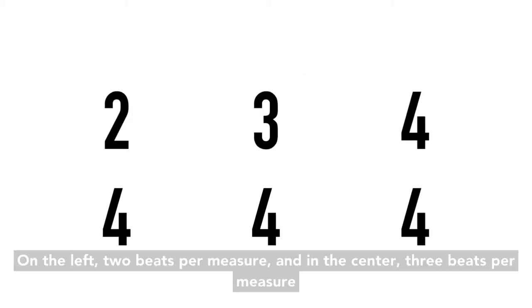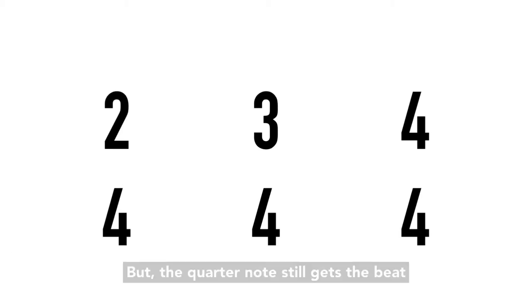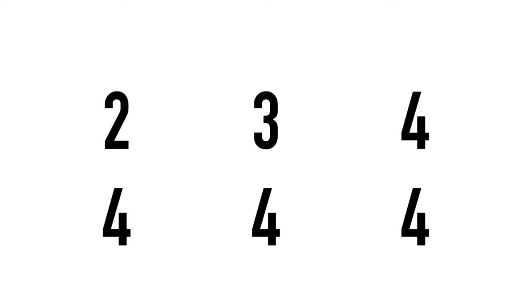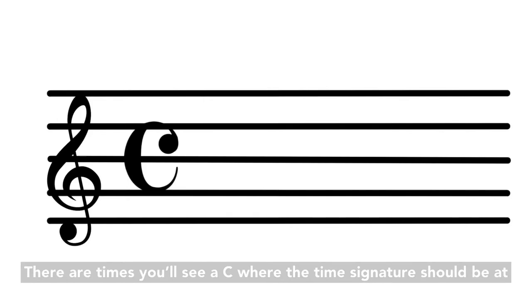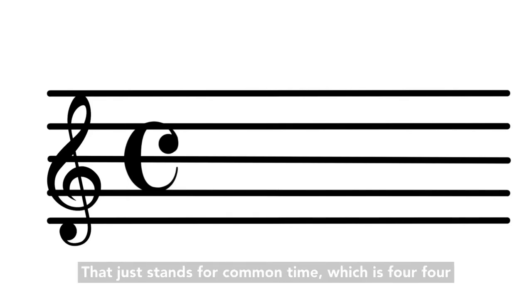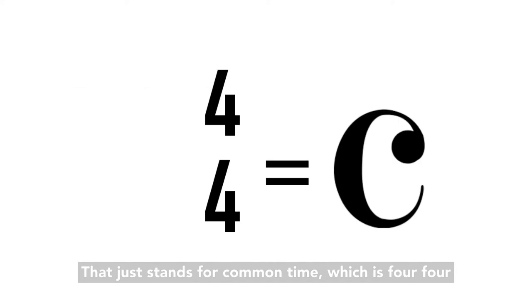On the left, two beats per measure, and in the center, three beats per measure, but the quarter note still gets the beat. There are times you'll see a C where the time signature should be. That just stands for common time, which is four-four.